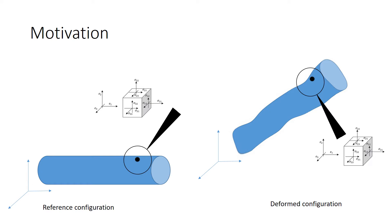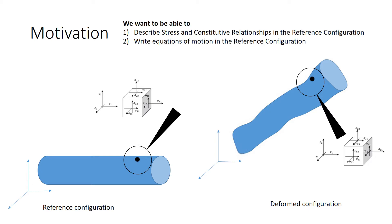This motivation led to the development of the two stress measures presented here: the first and second Piola-Kirchhoff stress tensors. These stress tensors allow us to describe stress and constitutive relationships in the reference configuration. We can even write the equations of motion in the reference configuration rather than in the deformed configuration.